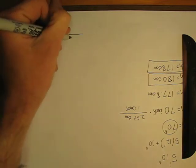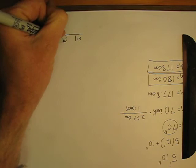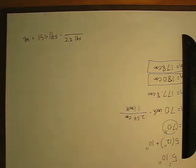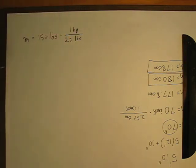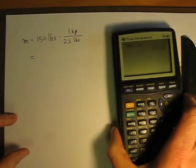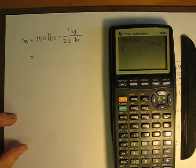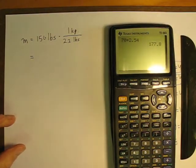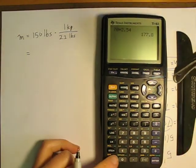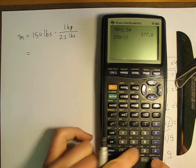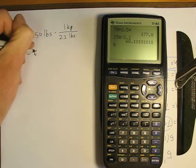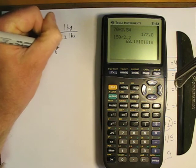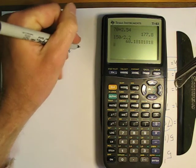So, I want the pounds to cancel. So, I put pounds down here, 2.2 pounds. Up on top, I have 1 kilogram. So, in this case, I'm going to take 150 and divide it by 2.2 pounds. So, 150 divided by 2.2 pounds per kilogram.